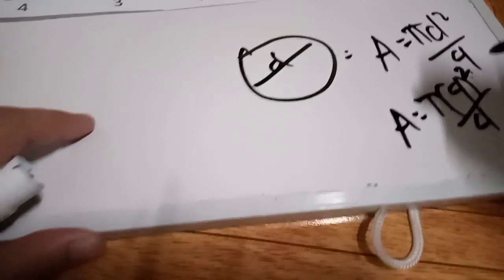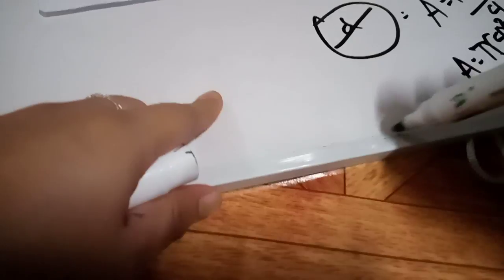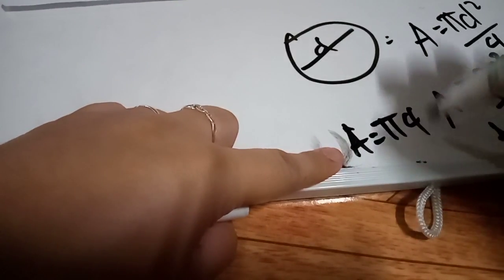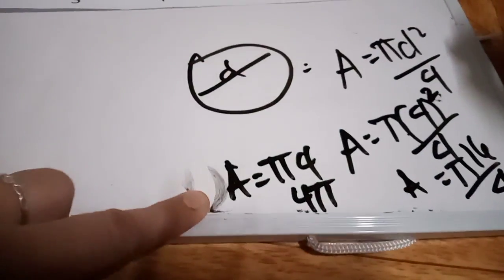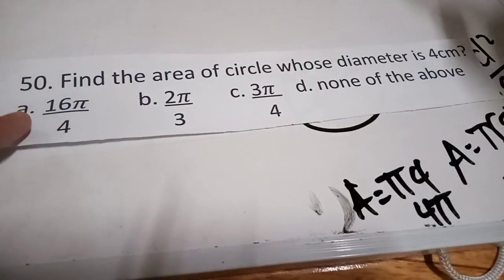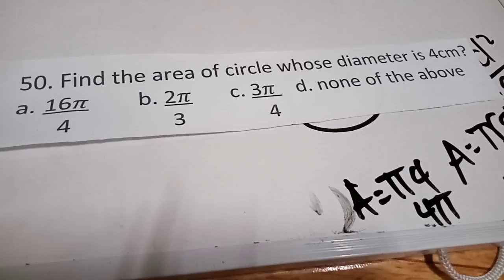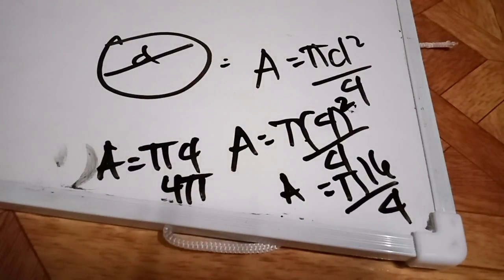We have pi times 16 over 4. A equals 16 divided by 4, which is 4 pi. The best answer is letter A. Take note: you need to get the simplified answer, but if there is no simplified form, choose the equivalent one, which is 16 pi over 4. The answer is letter A, not letter B. Let's proceed to number 51.